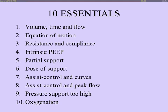Summary — the 10 essentials: one, be aware of the relationship between volume, time, and flow; two, understand the equation of motion; three, understand resistance and compliance; four, be aware of intrinsic PEEP; five, know that partial support means any combination of airway and muscular pressure; six, your main job is to titrate the dose of support; seven, look at the curves during assist control; eight, be very careful with peak flow settings; nine, know that pressure support can easily be set too high; and ten, think about oxygenation during partial support. Thank you very much.